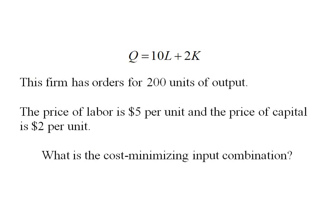Here we have a production function, 10L plus 2K, and this firm has orders for 200 units of output. Let's let the price of labor be $5 and the price of capital $2. Let's find this firm's cost-minimizing combination of labor and capital.